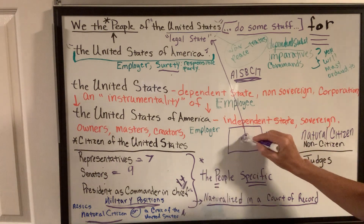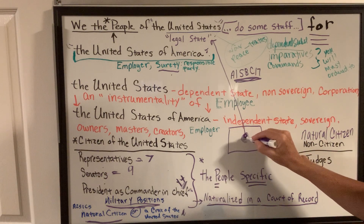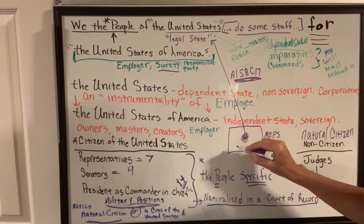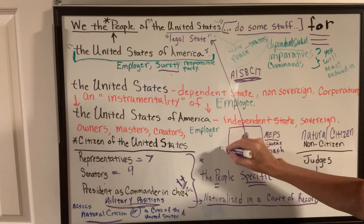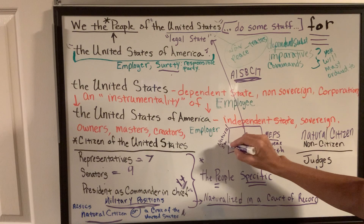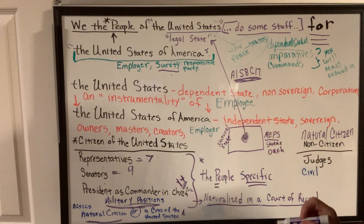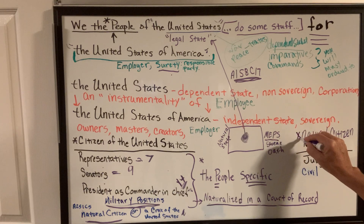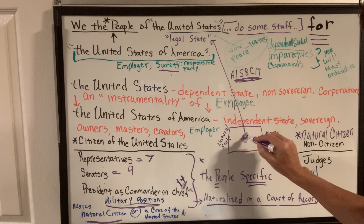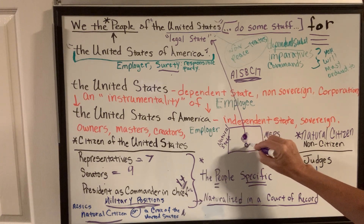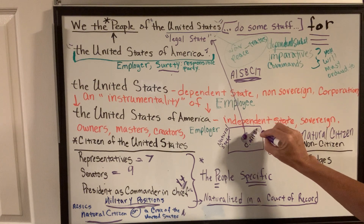If you're getting paid Federal Reserve notes, it doesn't matter if it says State of Texas, State of Oklahoma, state of whatever — you belong to the United States as part of its legal state. Its legal states are called 'State of whatever.' The natural state has natural citizens, and its creation — the legal state, the military, the United States — has citizens of the United States.